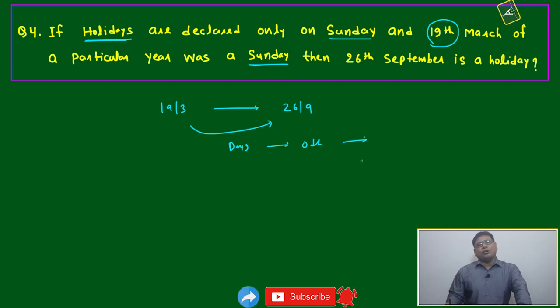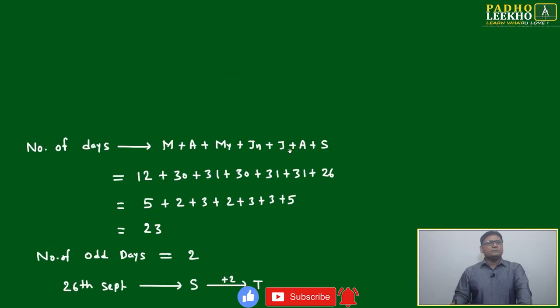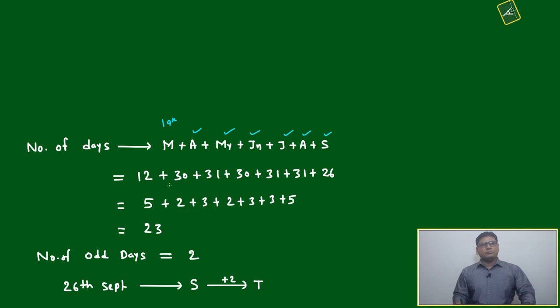This is simple. Number of days: we are calculating from 19th March through April, May, June, July, August, September. March will be 12 days because it starts from 19th - the 19th will be excluded, so 12 will be left.